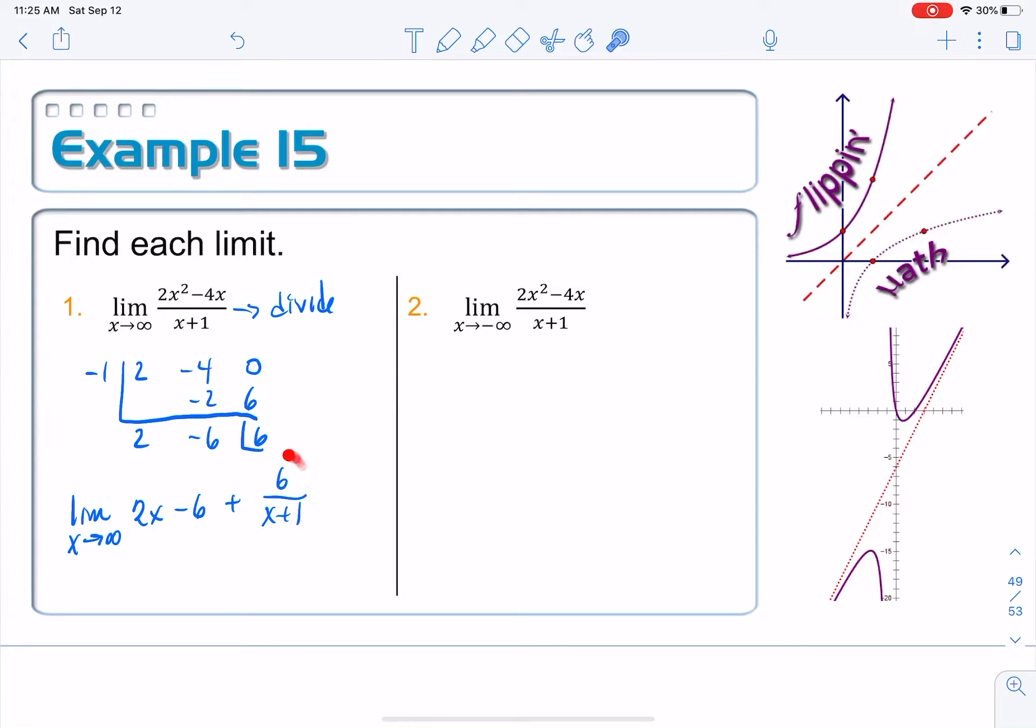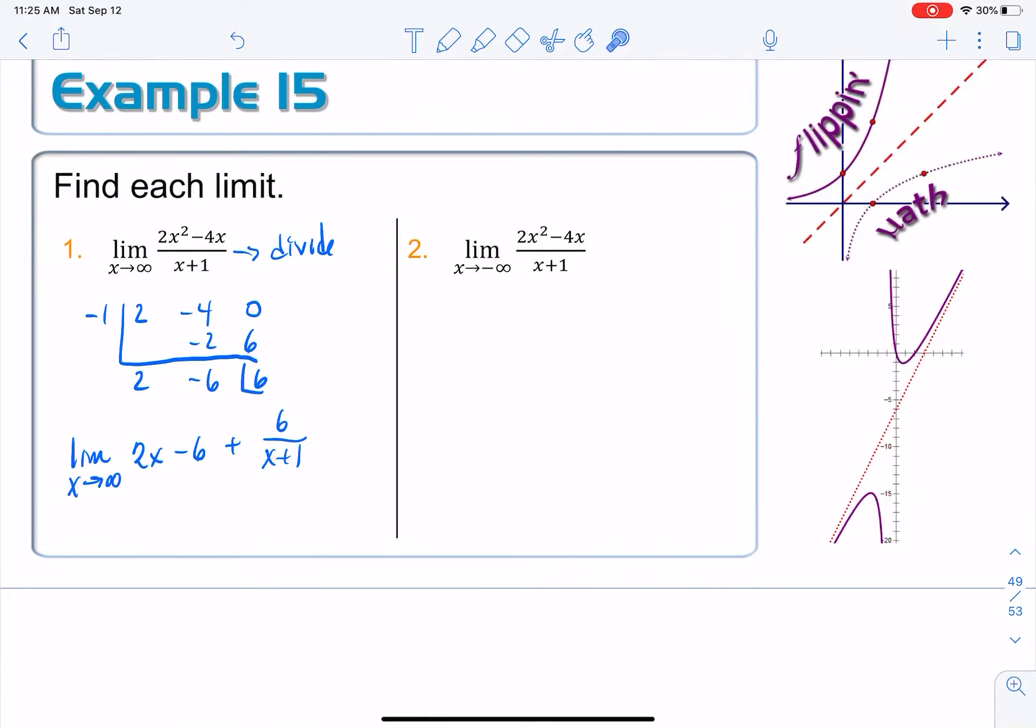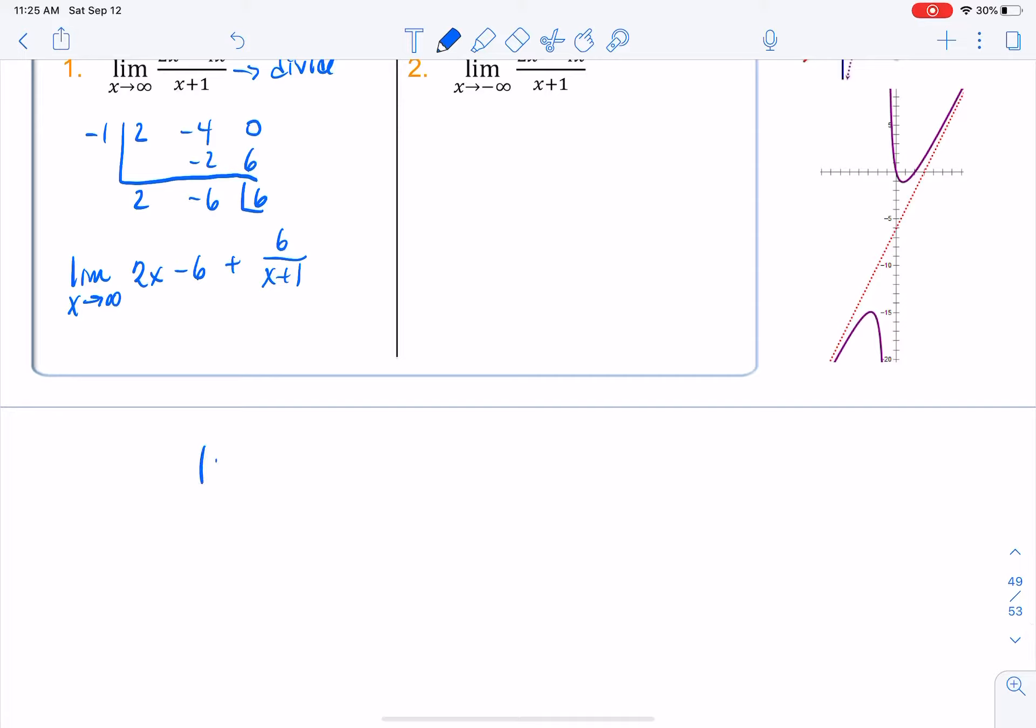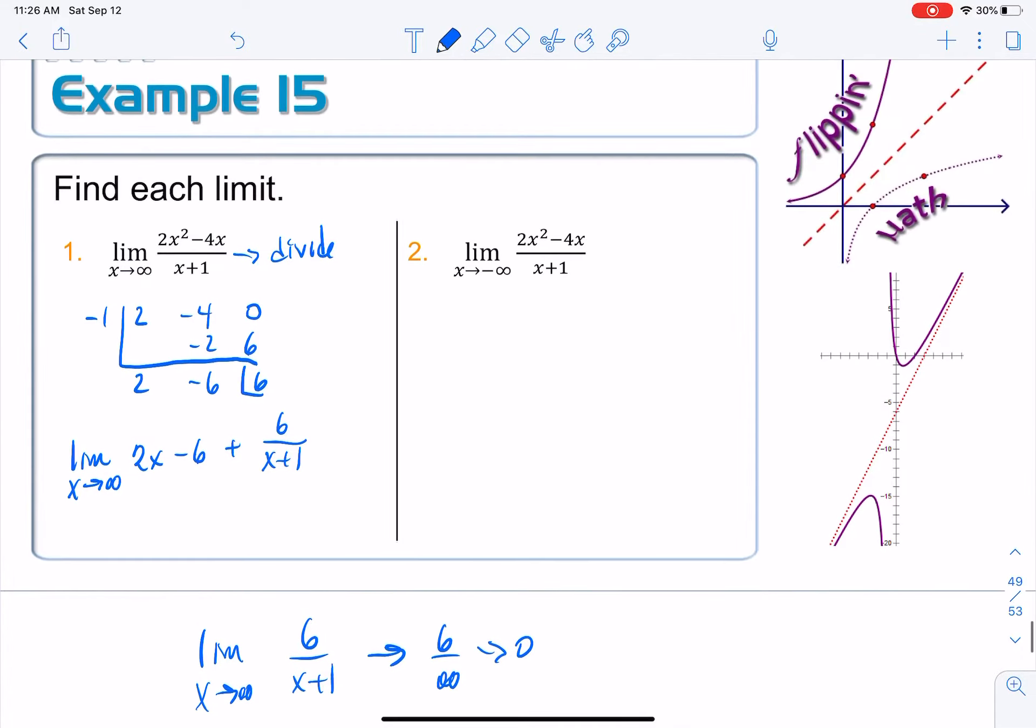But did you ever ask yourself, what am I supposed to do with the remainder that's over here, the six over x plus one? And of course, your teacher's just like, that part you ignore, or that part goes to zero. Well, we can understand that now in the context of limits. Because if I just take the limit of that remainder part, the limit as x approaches infinity of six over x plus one, and plug in an infinity, we essentially have six over infinity, which we know goes to zero. So in this limit question, this portion is going to zero, and that's why we always ignored it in terms of finding the equation of the slant asymptote. All right, I think we're almost done here.